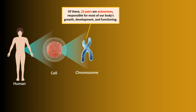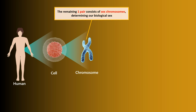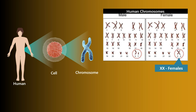Of these, 22 pairs are autosomes, responsible for most of our body's growth, development, and functioning. The remaining one pair consists of sex chromosomes, determining our biological sex — XX for females and XY for males.